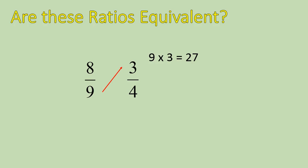9 times 3 is 27, and 4 times 8 is 32. So these numbers, 32 and 27, are not equal to each other. Therefore, these are not equivalent fractions or equivalent ratios. So that's one way to determine if ratios are equivalent — just do some simple cross-multiplying.